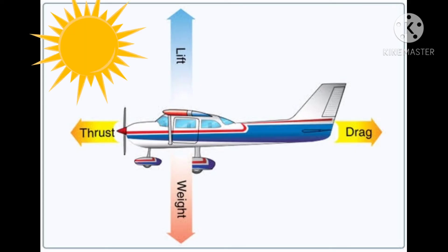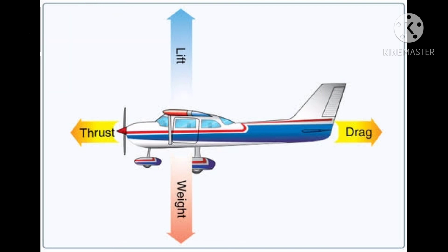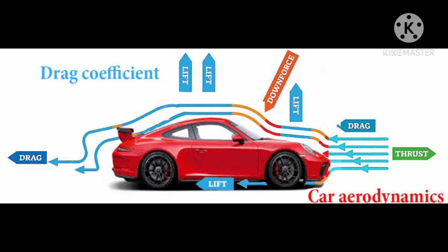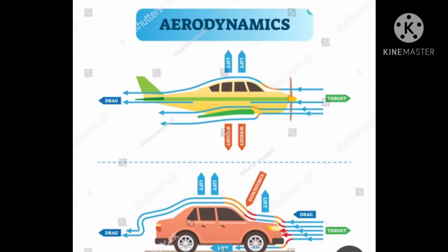Aerodynamics is the way air moves around things. The rules of aerodynamics explain how an airplane is able to fly. Anything that moves through air reacts to aerodynamics. Aerodynamics even acts on cars, since air flows around cars.